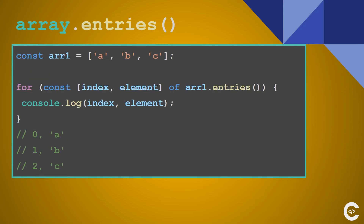entries returns a multi-dimensional array where each sub-array has length 2 — the first element is the index and the second is the element itself. This is useful when you want to use a for...of loop but also need the index. Using entries you have both index and element available.